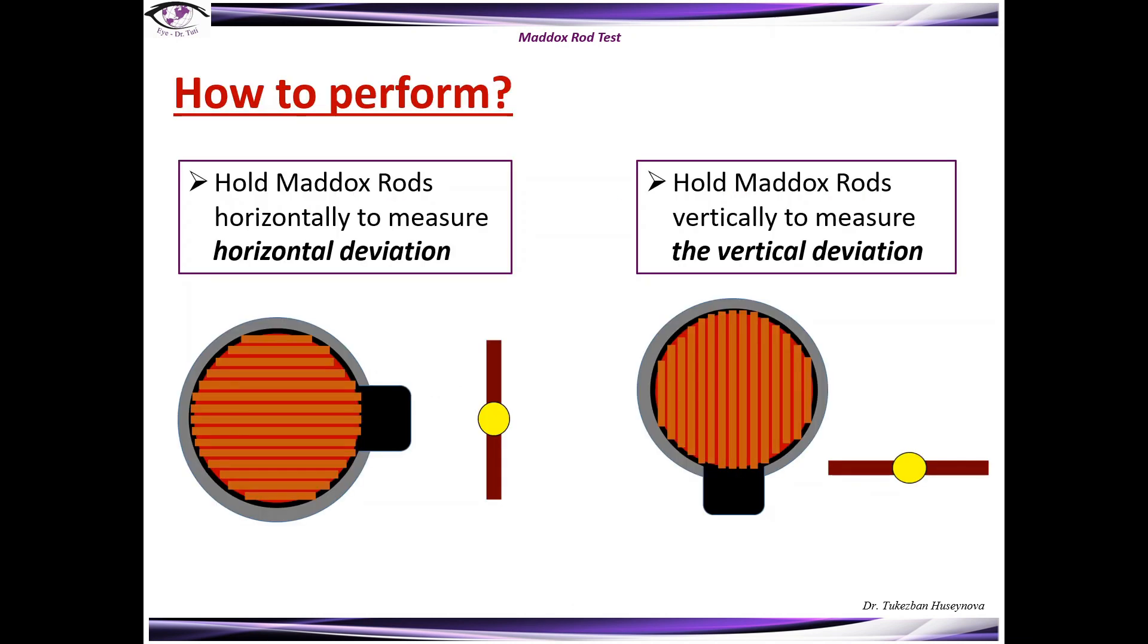How to perform? Hold Maddox rods horizontally to measure horizontal deviation and hold Maddox rods vertically to measure vertical deviation.